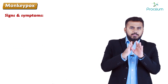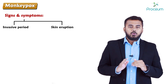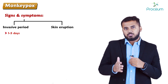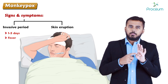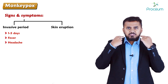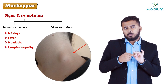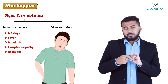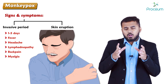The infection is divided into two periods: the invasive period and the skin eruption period. The invasive period lasts one to five days, during which symptoms include fever, severe headache, lymphadenopathy — which is the most characteristic feature — affecting submandibular, pre-auricular, post-auricular, and occipital lymph nodes, severe back pain, myalgias, and asthenia.